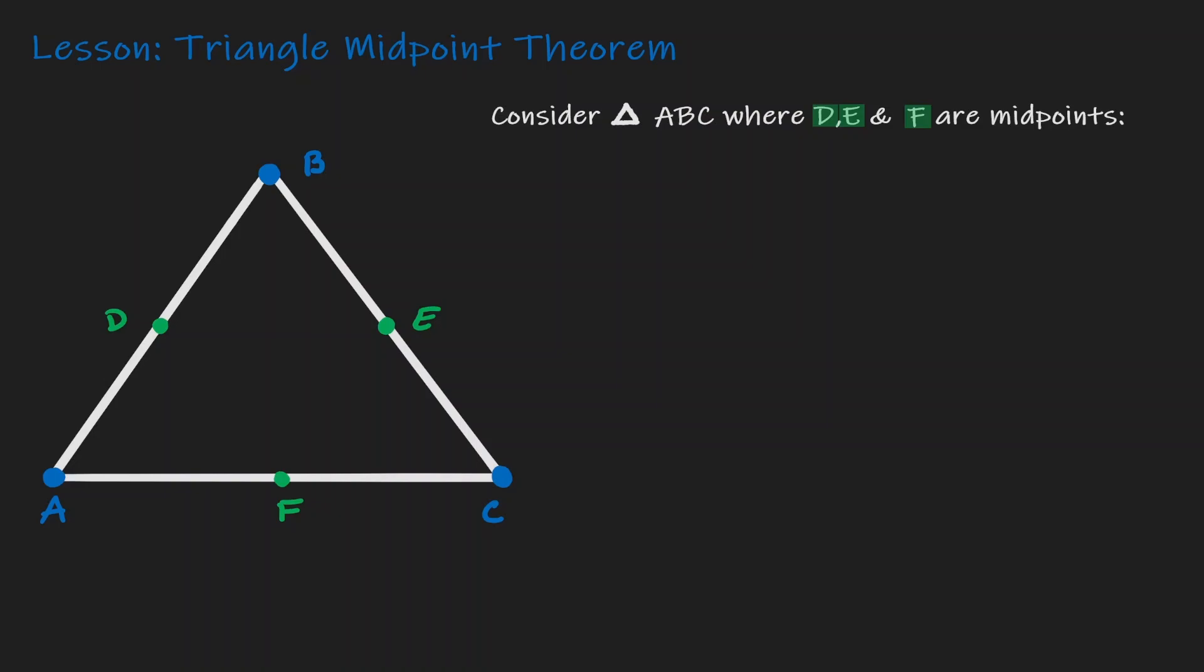Now what's so special about these green points is that they are located right in the middle of the line segment. So we can call them the midpoints for each of those segments. So what would happen if we start connecting midpoints?